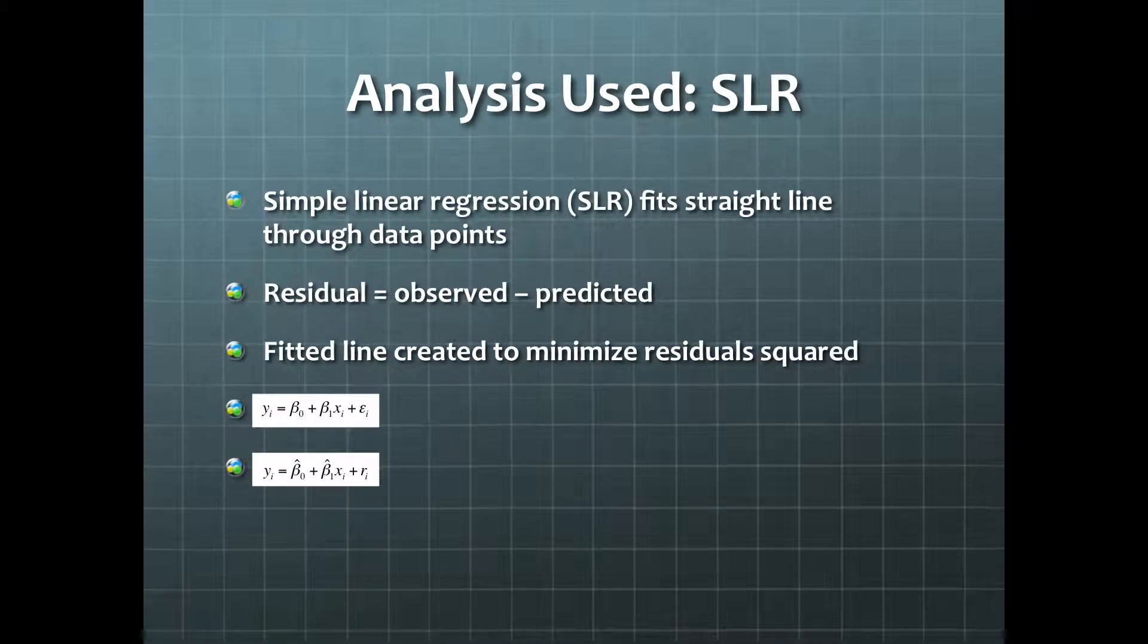To analyze the data, we'll use simple linear regression. This is appropriate because we have a scalar variable, the actual spread, and an explanatory variable, the Vegas spread. Simple linear regression fits a straight line through data points.